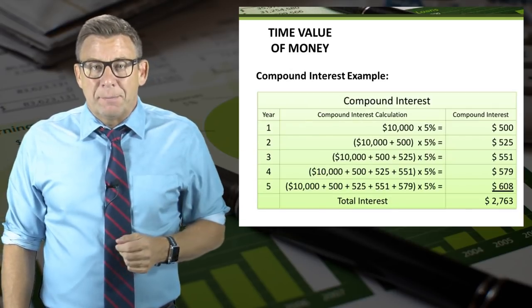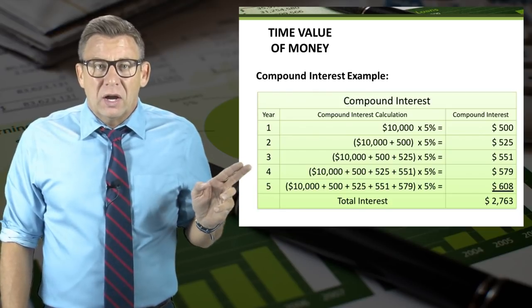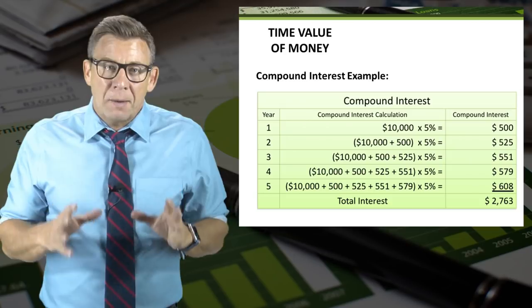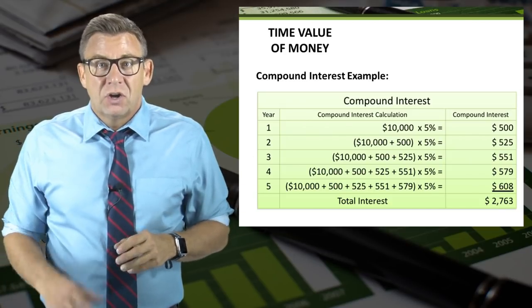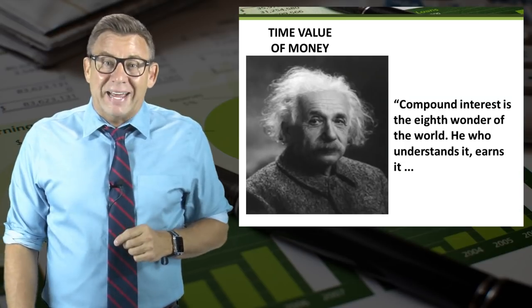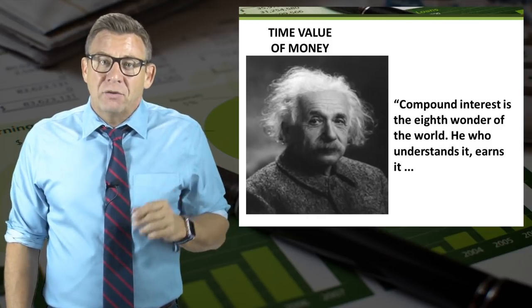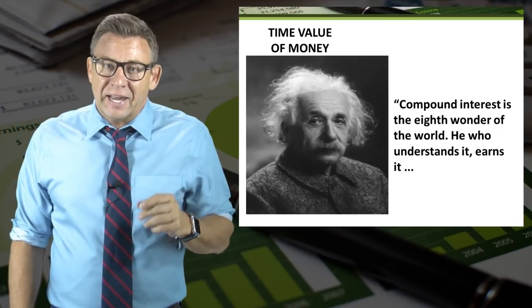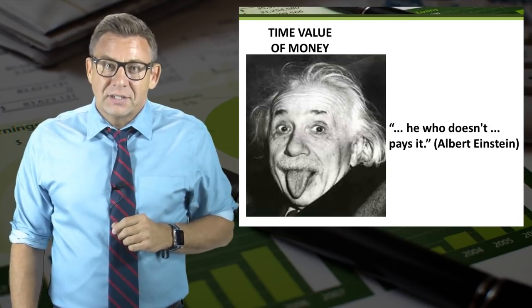Here is an example of compound interest. The same $10,000 earning 5% annual compound interest results in $2,763 of interest over that same time period. Compound interest is when interest is calculated on the principal amount and on the interest earned to date. Albert Einstein is credited with the quote: 'Compound interest is the eighth wonder of the world. He who understands it, earns it. And he who doesn't, pays it.'